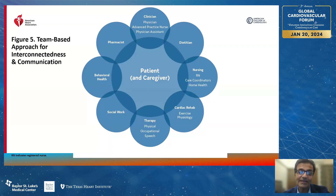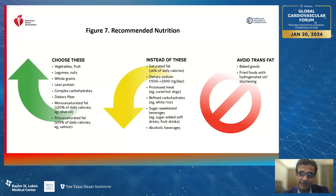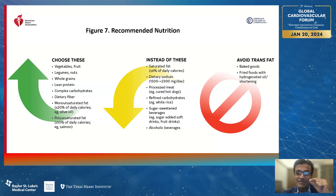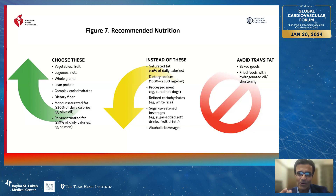The second message is that a healthy diet and exercise is recommended for all patients with chronic coronary disease. When patients have good lifestyle — good diet and exercise — it leads to a multiplicative effect. Medications are important, but good lifestyle makes those medications lead to even more beneficial effects. The guideline outlines what patients should choose versus avoid, such as trans fats, and provides recommendations regarding dietary sodium and saturated fat.